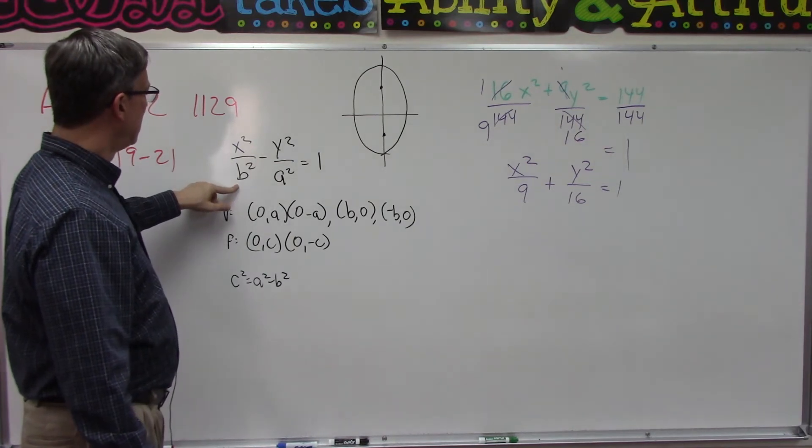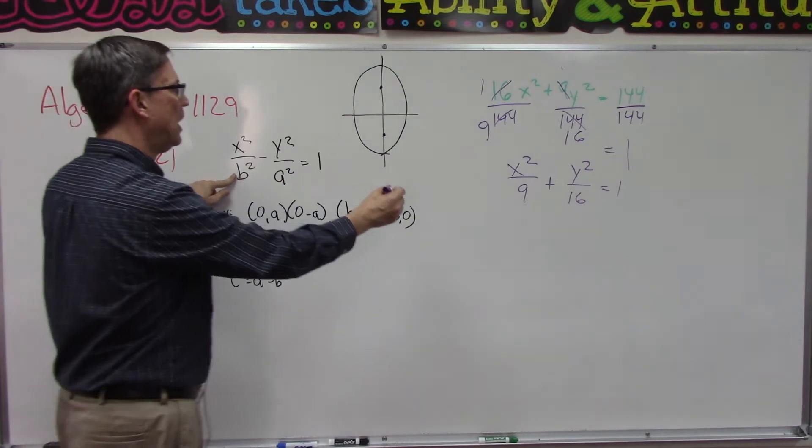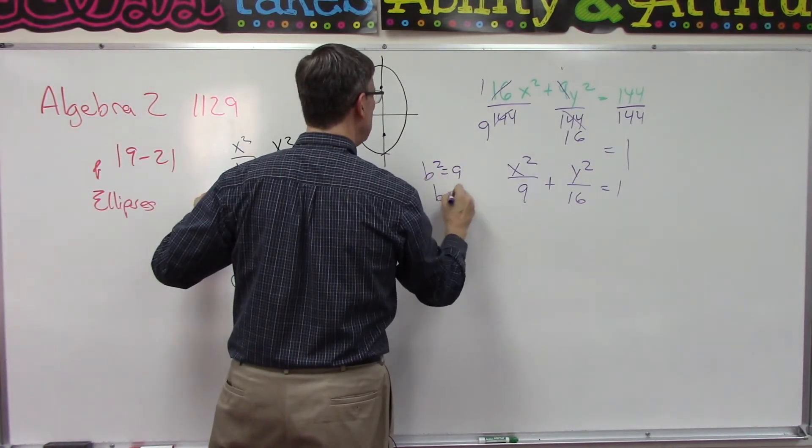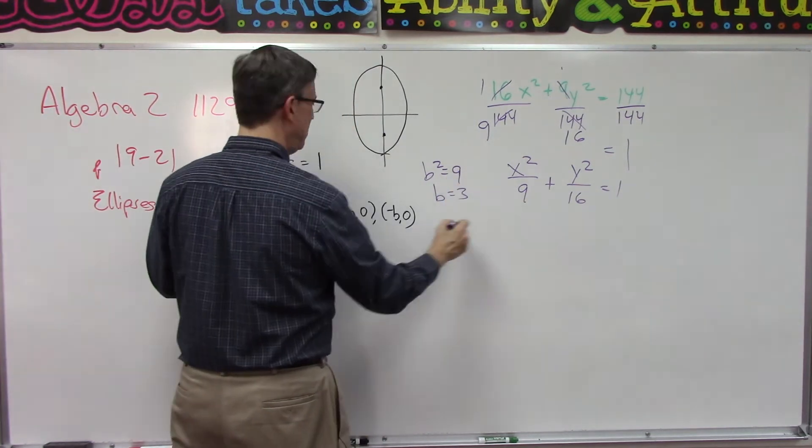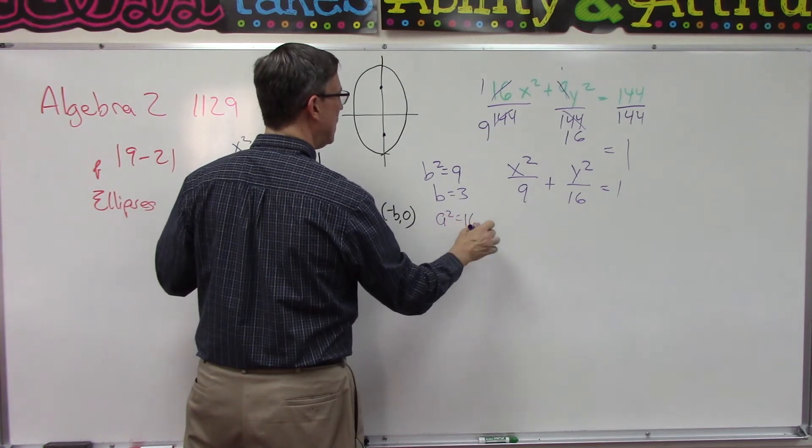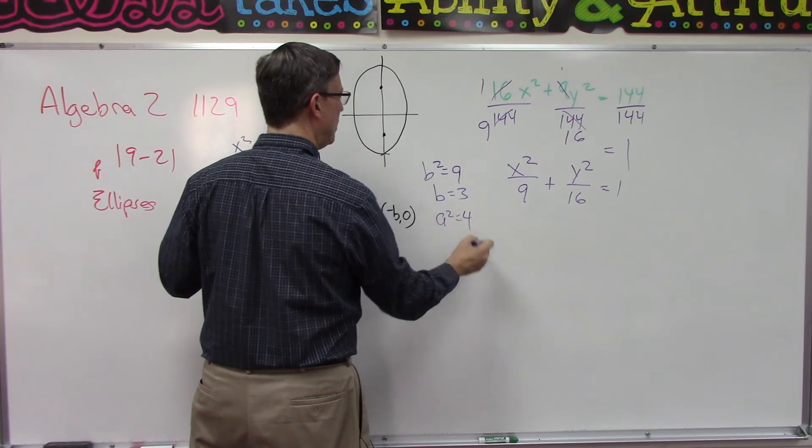B squared is going to equal 9, which means b equals 3. And then a squared is going to equal 16, which means a equals 4, the square root of 16.